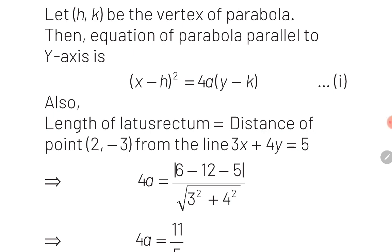The general equation of parabolas with axis parallel to y-axis is (x - h)² = 4a(y - k). In this equation, 4a is the length of latus rectum, which is the distance of point (2, -3) to the line 3x + 4y = 5. To calculate this perpendicular distance, we substitute the point into the equation of the straight line and divide by √(a² + b²) where a and b are coefficients of x and y. The numerator becomes 3(2) + 4(-3) - 5, divided by √(3² + 4²).